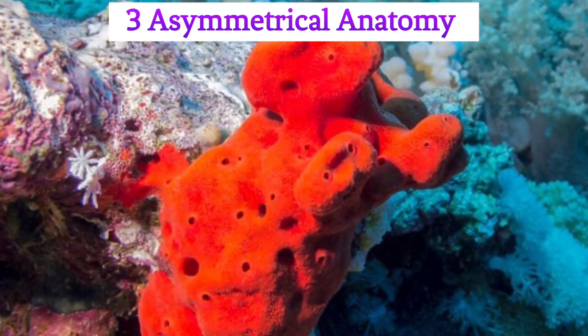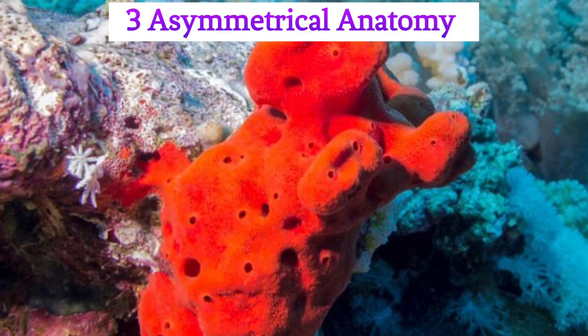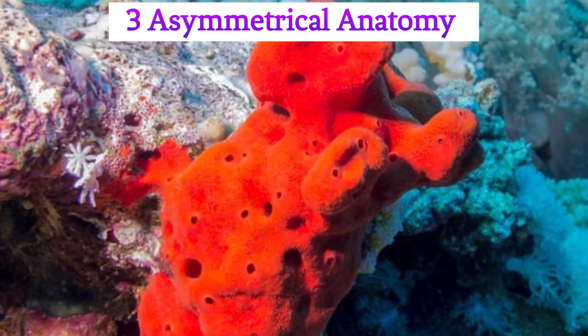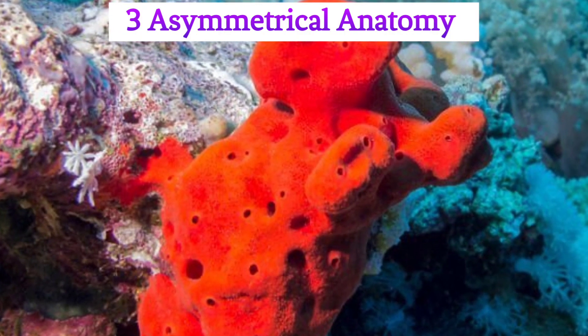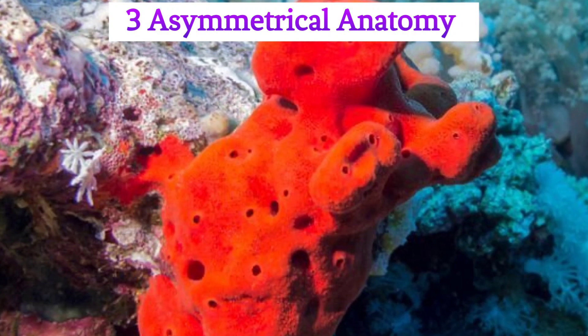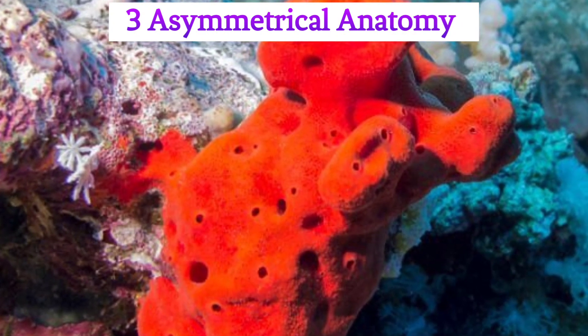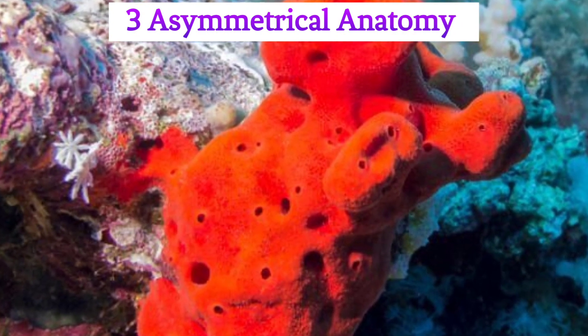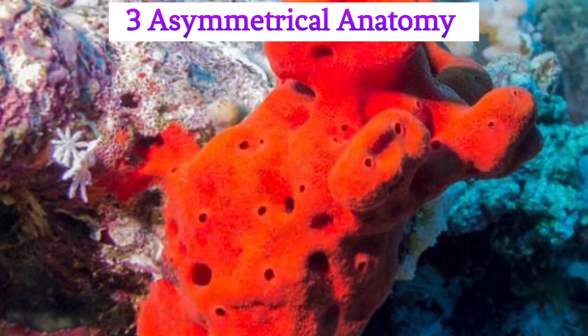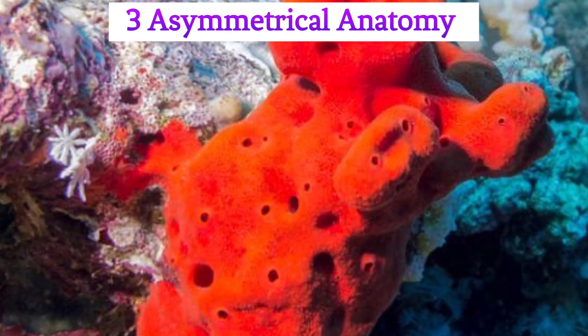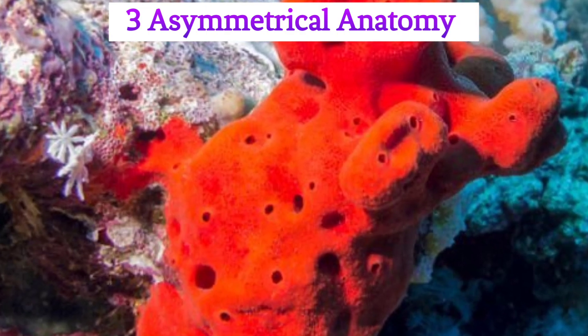Point 3: Asymmetrical anatomy. Unlike many other animals, sponges exhibit asymmetrical body shapes. They can take various forms, from encrusting on surfaces to branching structures.